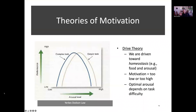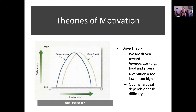We're going to talk about three theories of motivation. The first one is drive theory, which says that basically what we want is to be in balance. We don't want to be too hungry or too full, too hot or too cold, too stressed or too bored — we want to be right in the middle. Drive theory says that when we get too hungry, that motivates us to get back to the middle. We call this middle state homeostasis.